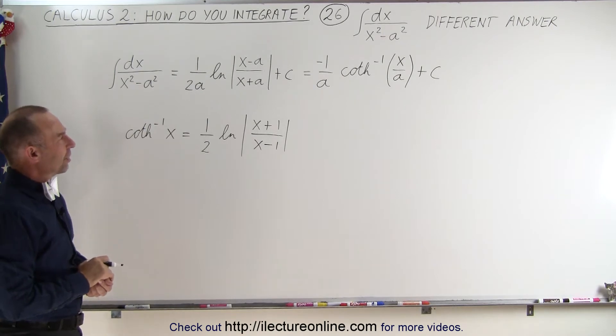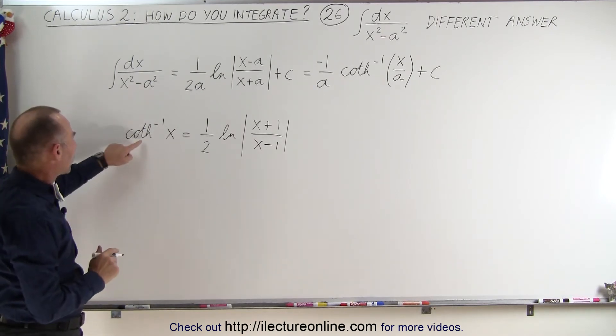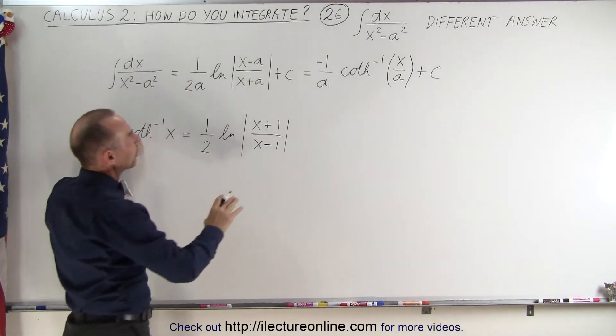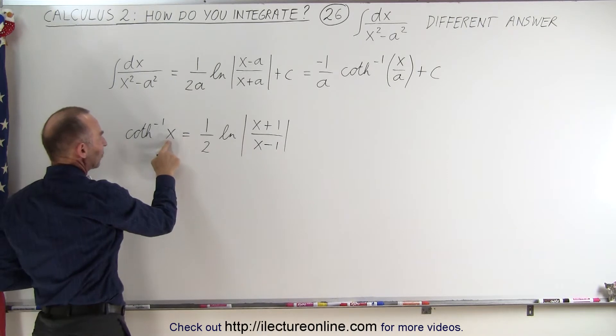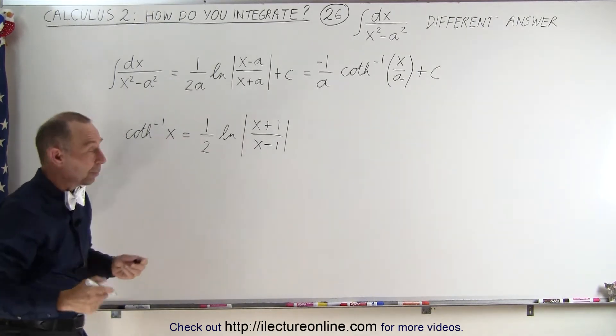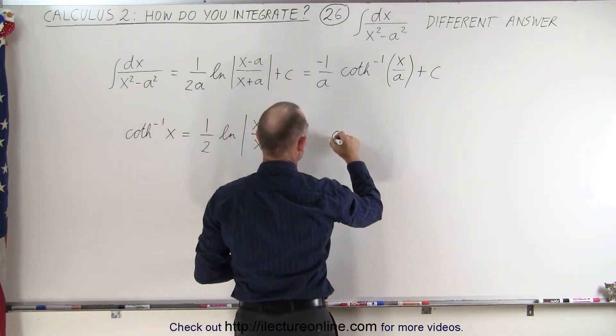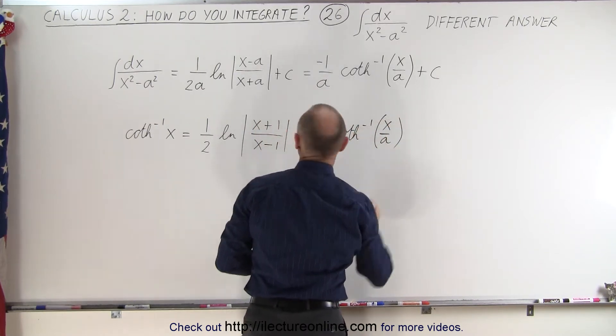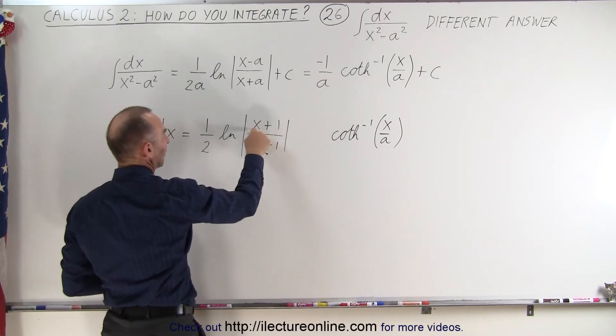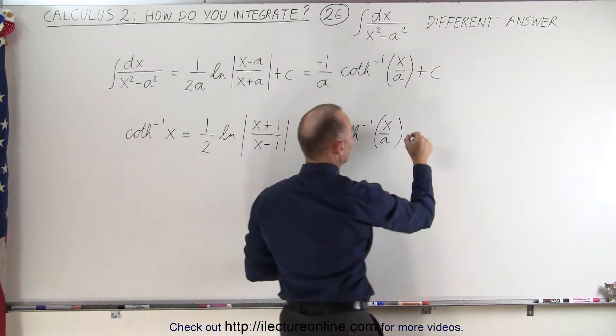So what we need to do now is not find the inverse hyperbolic cotangent of x, but to find it for x over a. So what we're going to do here is we're going to substitute every x for x over a and see what we end up with.